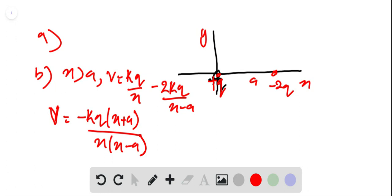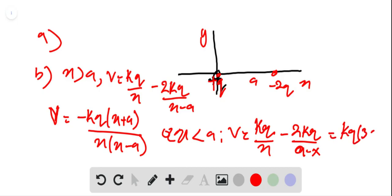For x greater than 0 and x less than A, then our potential V will be kq divided by x minus 2kq divided by A minus x. This will be kq times (3x minus A) divided by x into x minus A.